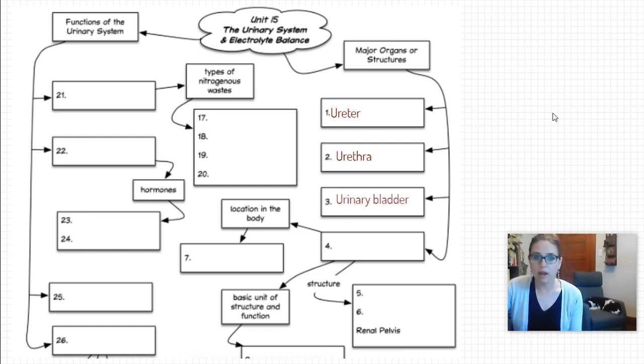Then we've got our urinary bladder made up of transitional epithelial so it stretches. All of these are very simple structures. The one that we focus mostly on was the kidney because it has that very important job of getting our waste out.